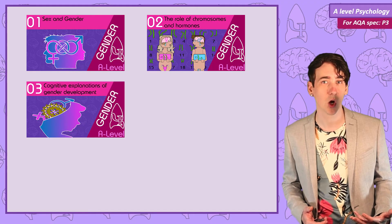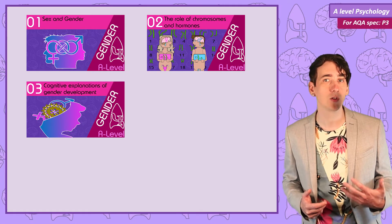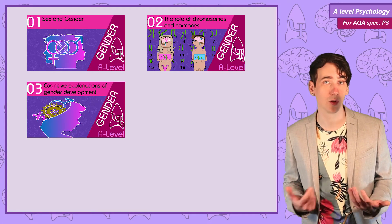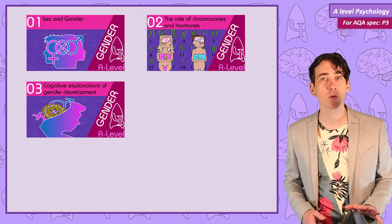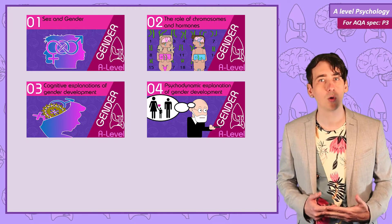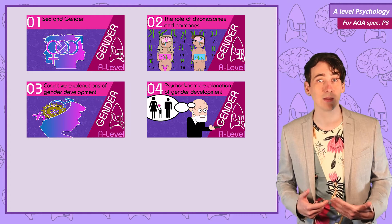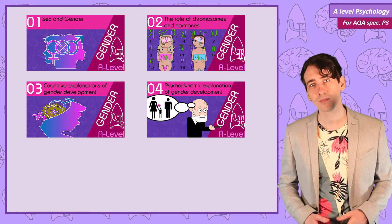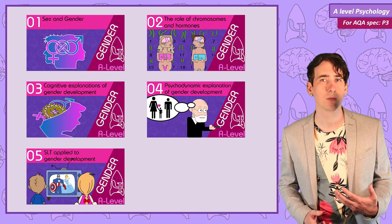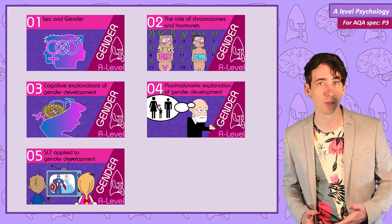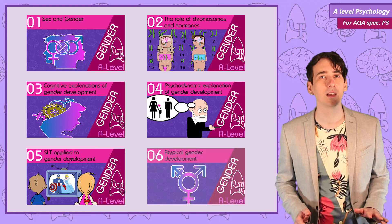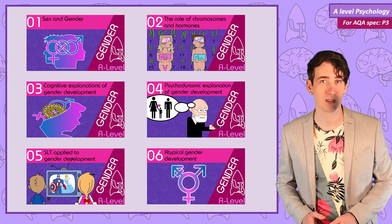We will then explain gender development with three competing perspectives. In the cognitive explanation, Kohlberg will explain how an understanding of gender develops as we mature and become aware of our own and other people's gender. Freud will explain gender development as due to early interactions with our mothers and fathers, ultimately identifying with and imitating the same sex parent. And finally social learning theorists will suggest that we develop our gendered behaviours through seeing others praised for sex appropriate gender behaviour, or being praised ourselves.